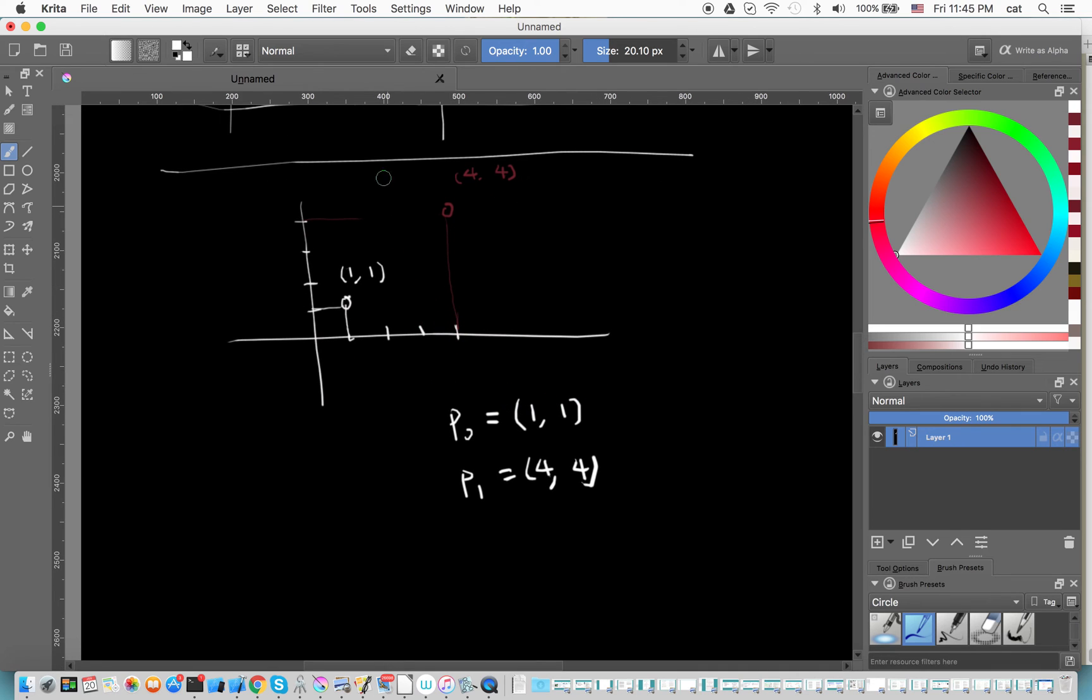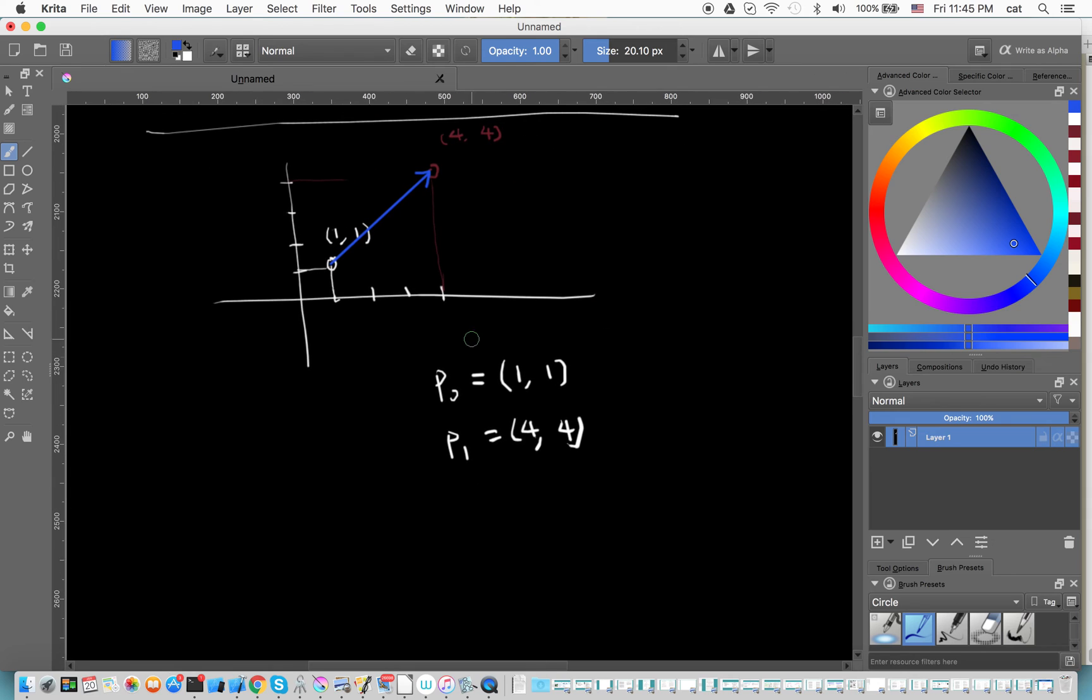So actually, if we look at P₀ and P₁, we can have a vector. We can have a vector from here, from P₀ to P₁.